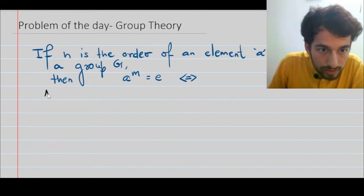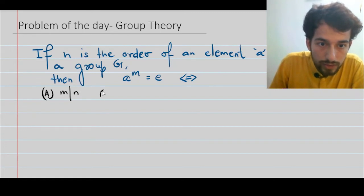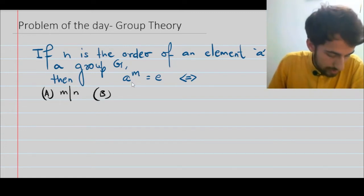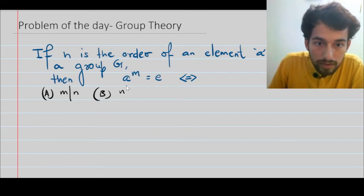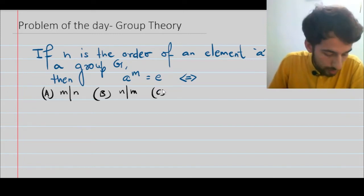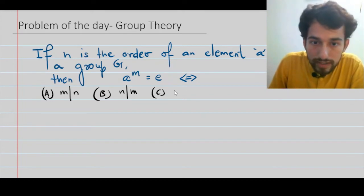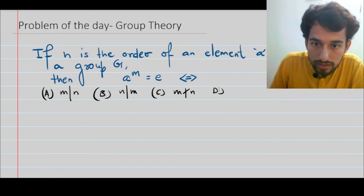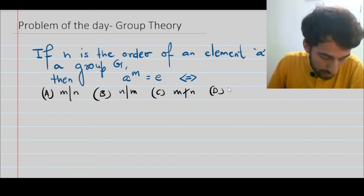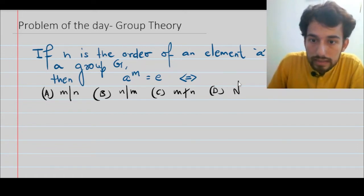So the first option is m divides n, second option is n divides m, third option is m does not divide n, and the last option is none of the above.